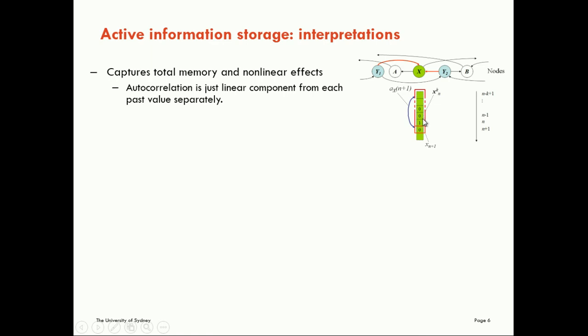But it's looking at them all, not only independently of each other, but also looking at the linear components only. The active information storage looks at the contribution of all of them as a collective and takes the non-linear component into account as well.